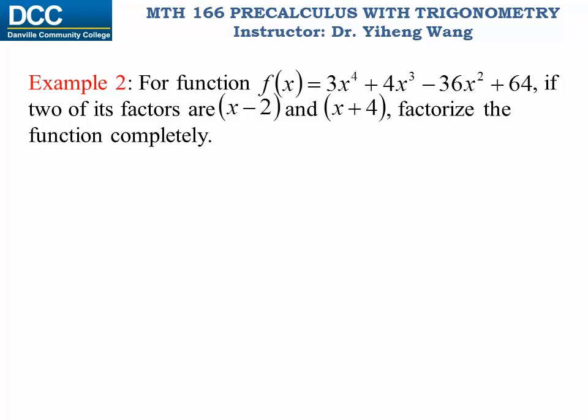In this example, for a fourth-degree polynomial function, if we know two of its factors — x minus two and x plus four — we need to find the remaining factors so that we can factorize this function completely. Again, we're going to use synthetic division and do a two-step division since we have two factors. We draw the symbol and fill in the coefficients from the original function, making sure the original function is written in a strict descending order of x powers.